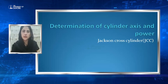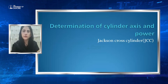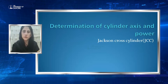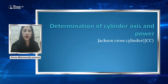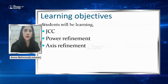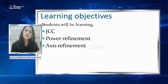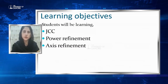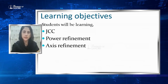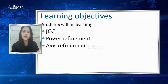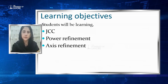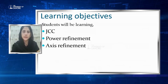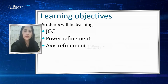In this lesson on the Jackson Cross Cylinder, we will be discussing the determination of cylindrical axis and its power. Students will be able to learn the identification of astigmatism, whether astigmatism is present or not, and how to perform power refinement and axis refinement.